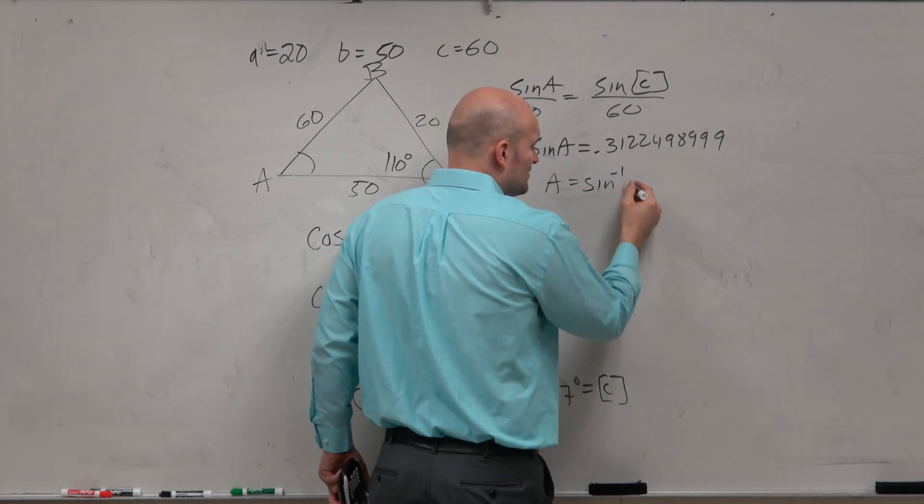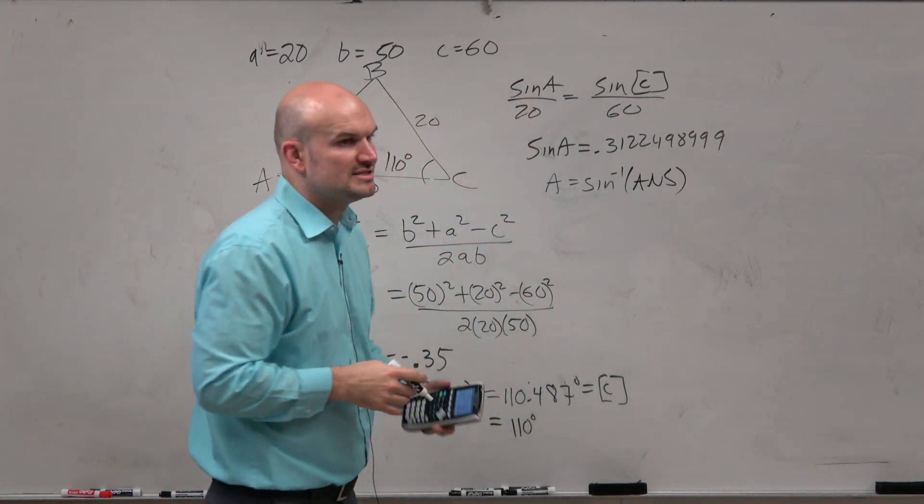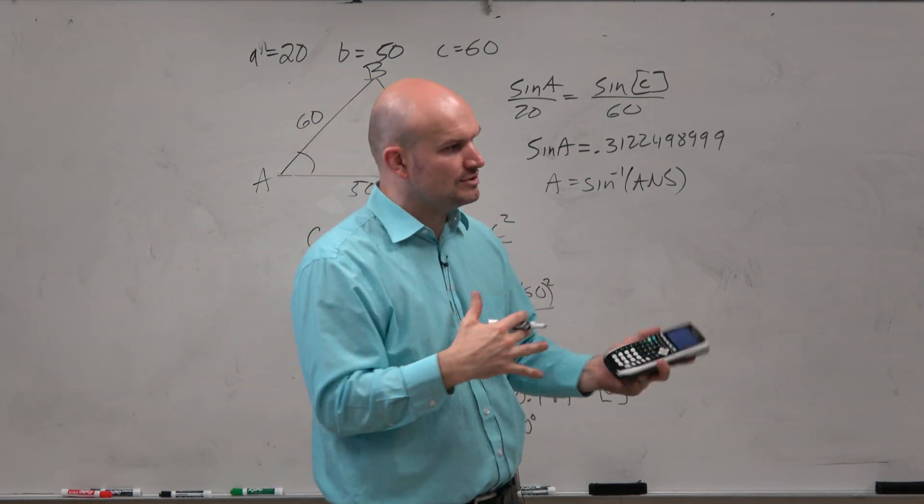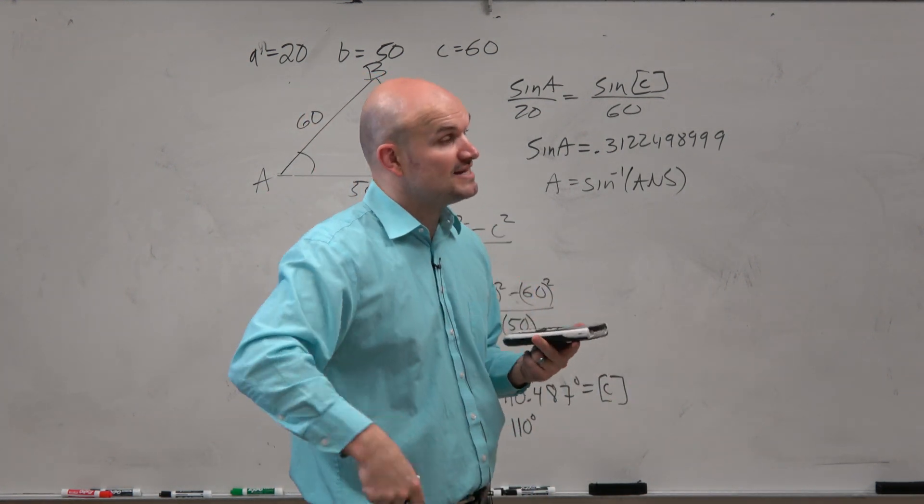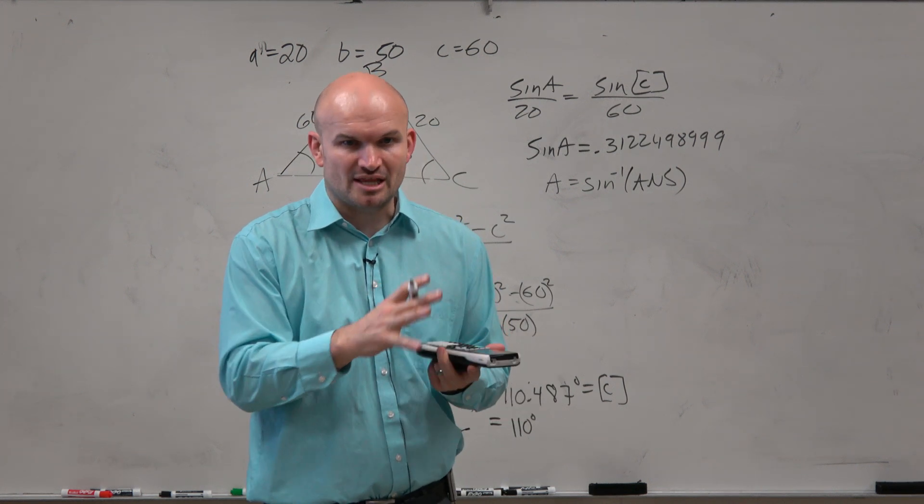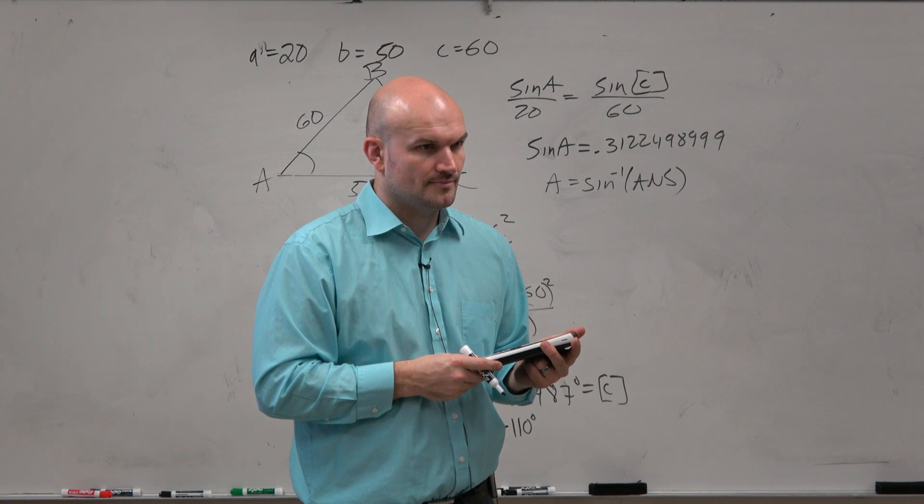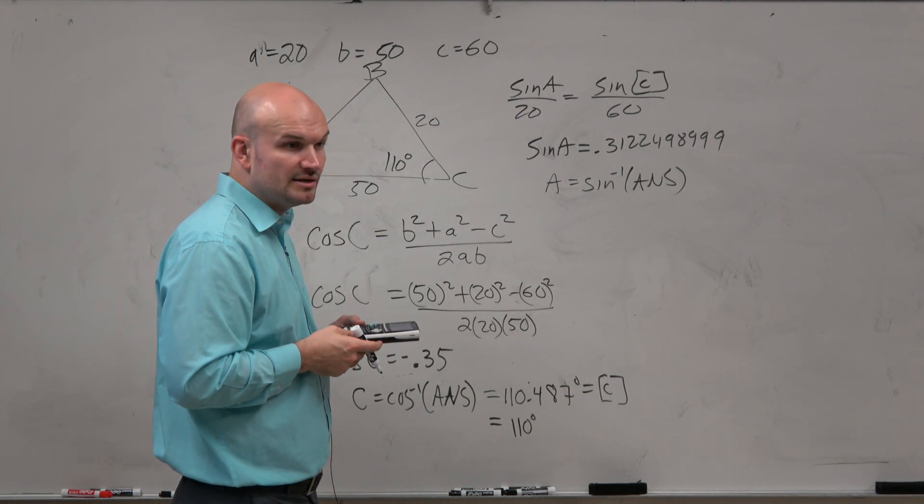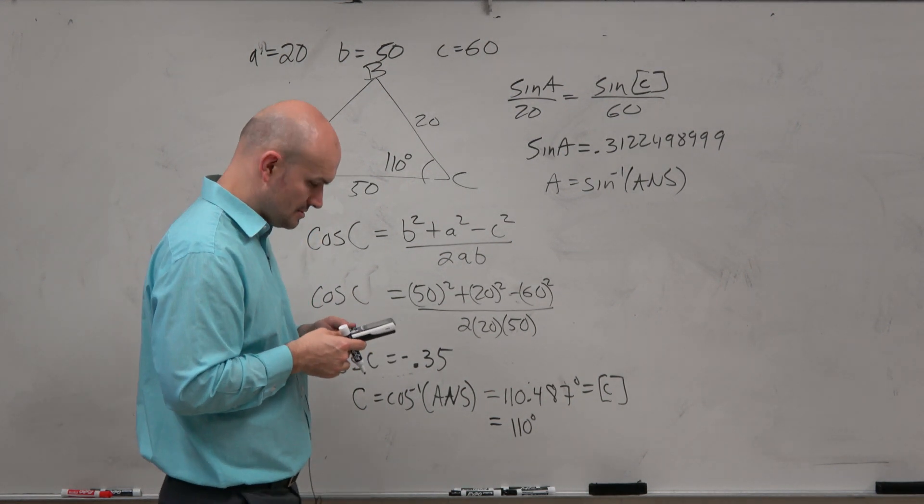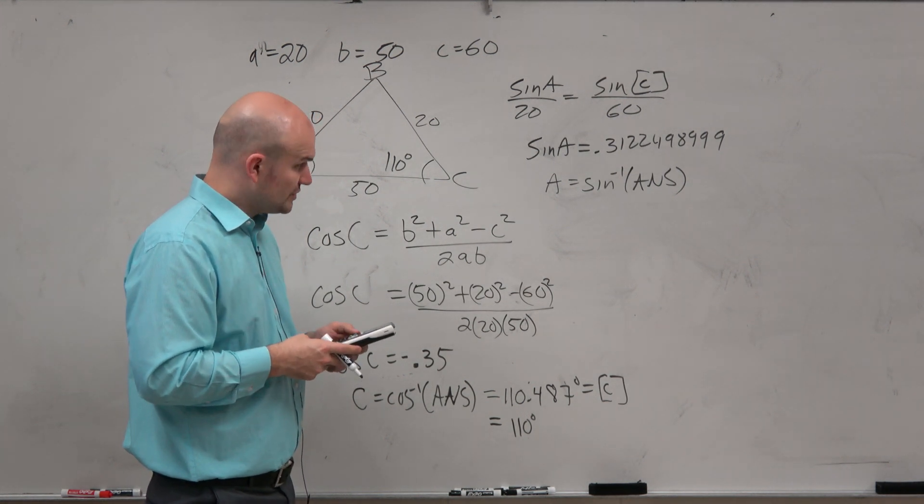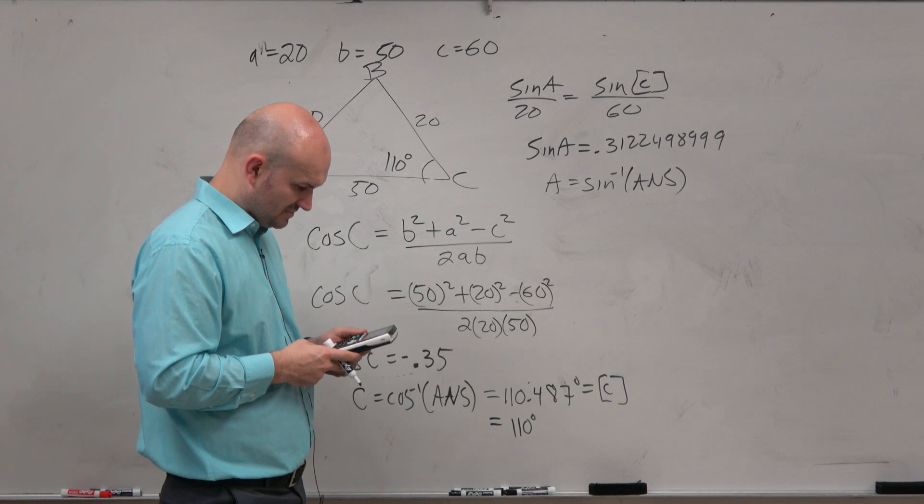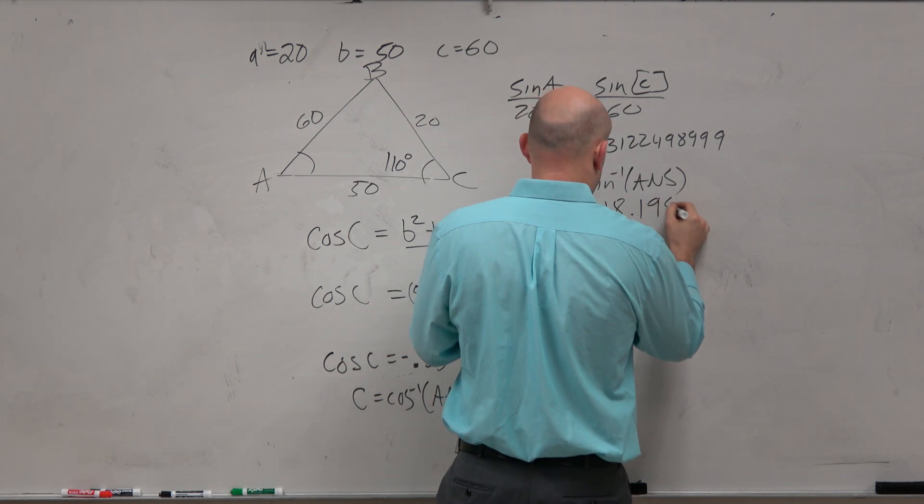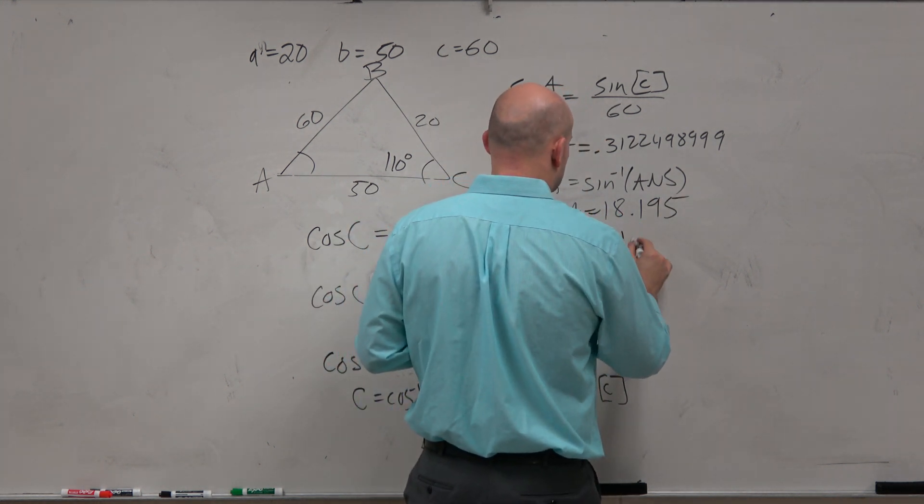I could type that all over again, but that was kind of a lot. Make sure you know how to use that answer feature, that last answer feature. And anything that I'm going over with you, if you're not able to follow or you have a calculator that's different, I'll walk around. Just make sure you ask me. Because everybody's at different levels with technology. So I would do sine inverse of my last answer, and I get 18.2 degrees, which I can round to 18 degrees.